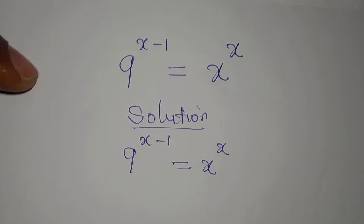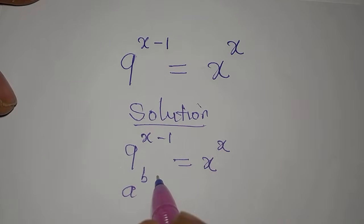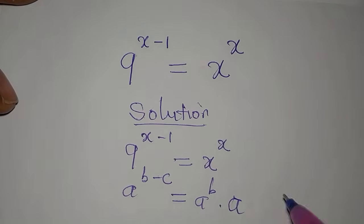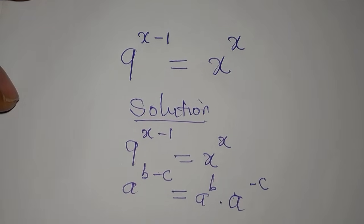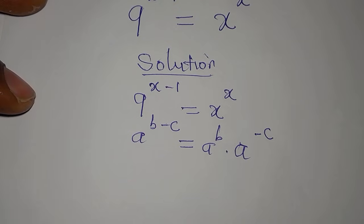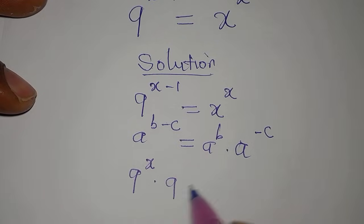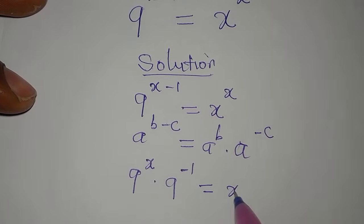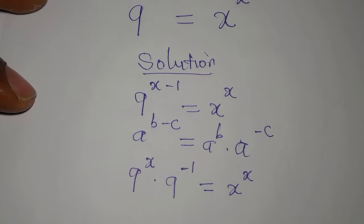We're going to apply the law: a to the power of b minus c equals a to the power of b multiplied by a to the power of negative c. Applying this to the left side, we now have 9 to the power of x multiplied by 9 to the power of negative 1, equals x to the power of x.